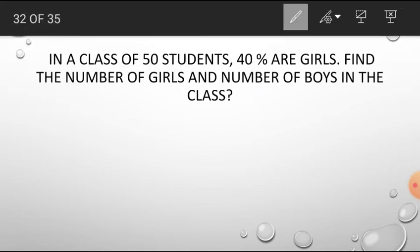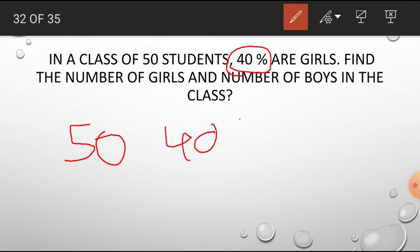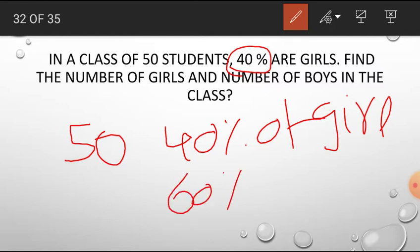Let us solve one more example in percentages. In a class of 50 students, 40 percent are girls. Find the number of girls and number of boys in the class. A class has 50 students, right? And among these 50 students, 40 percent are girls. So 40 percent of girls. And remaining, what is the percent of boys? Similarly, in 100 percent, 40 percent are girls, because remaining 60 percent are boys.